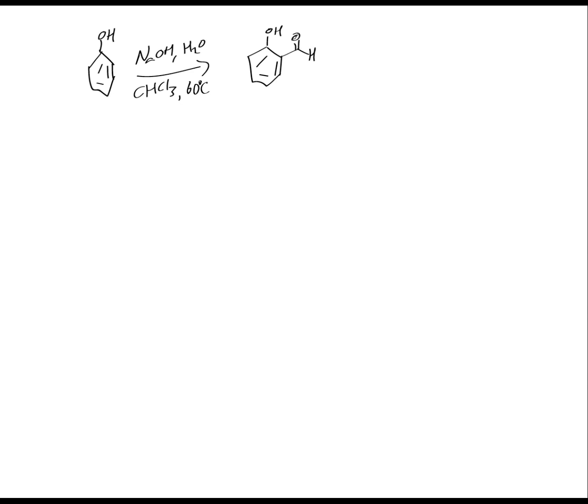So this is basically a formylation reaction. You're also going to get some minor products as well. We should always think about this when we're doing organic synthesis. What are the other compounds in the reaction mixture at the end? And you're also going to get it formulated in the para position there as well.